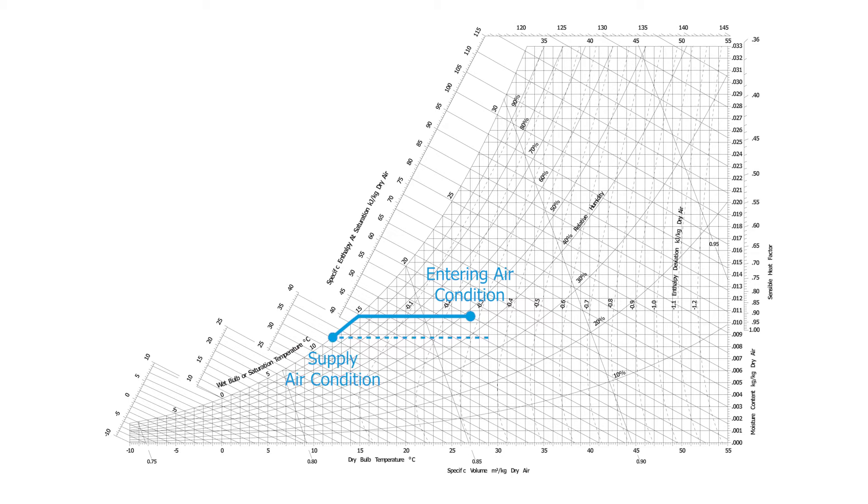As we can see from the chart, 12 degrees dew point has a moisture content of approximately 9 grams per kilogram of dry air. This supply air condition is adequate for most HVAC applications, however sometimes drier supply air is required.